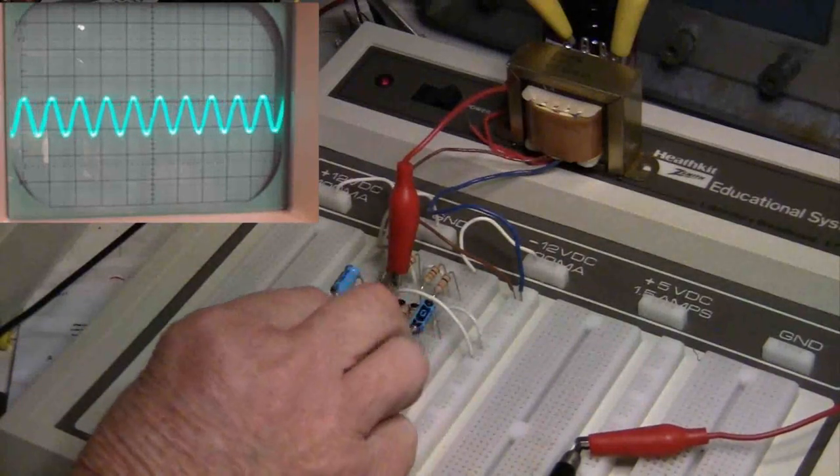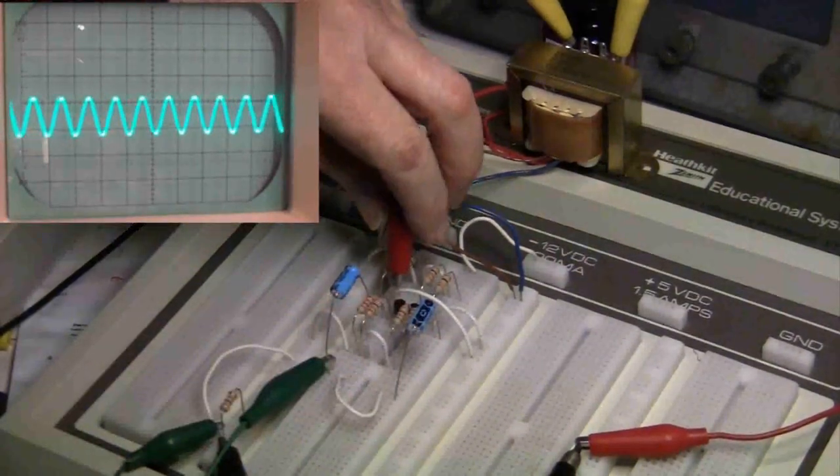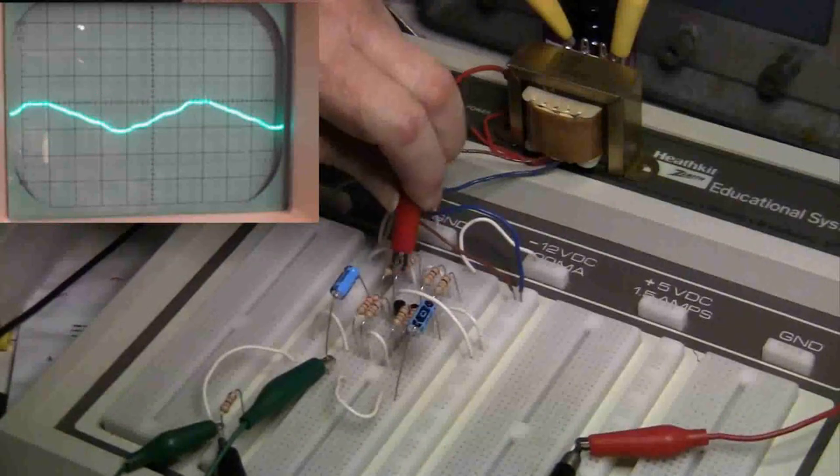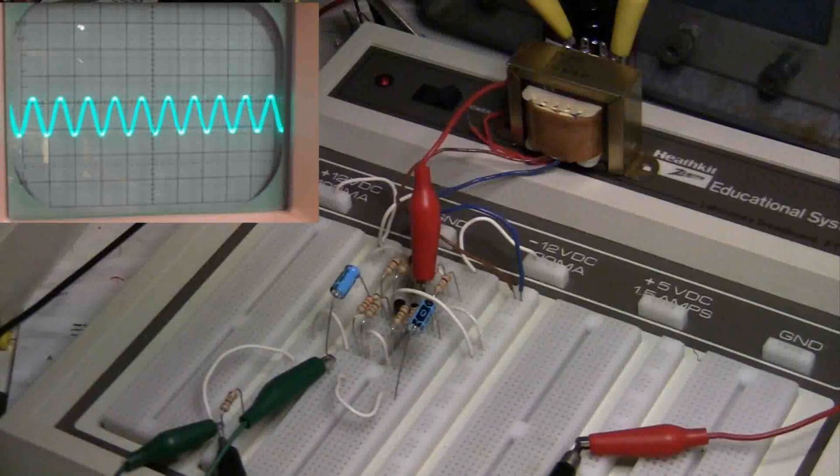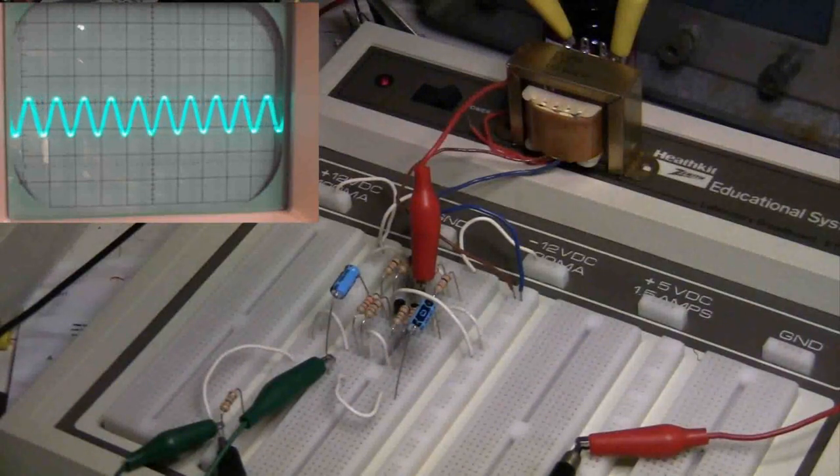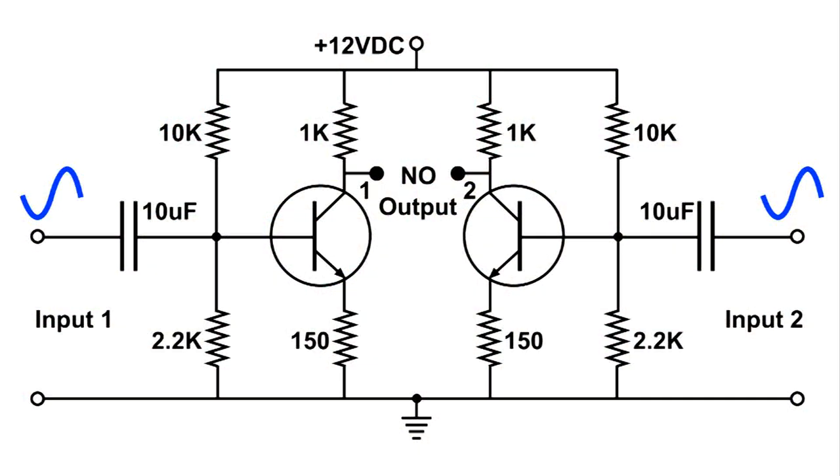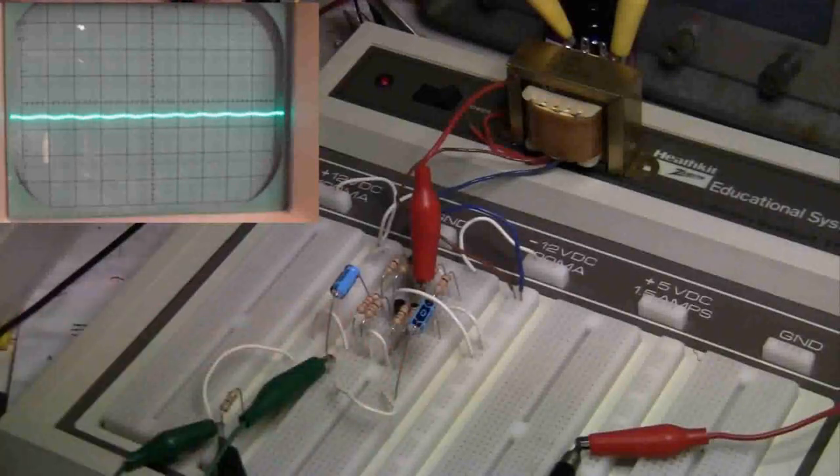Back to 1. Now I'm going to short the two inputs. The sound goes away, but we still have a trace on the scope. And we also have a trace on 2. Now we don't have any sound because both signals are the same coming out of each transistor. Now when I lift the lead, we get our tone back.